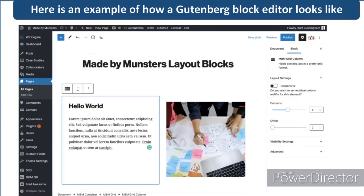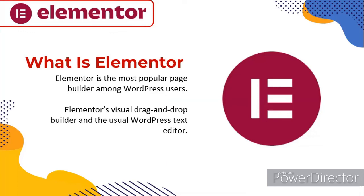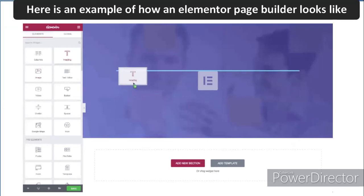Let's move on and talk about the other editor, Elementor. Elementor is the most popular page builder among WordPress users. It has an average rating of 4.7 out of 5 and over 5 million active installations. Elementor was first introduced in 2016 and took over the lead very fast. Its popularity is due to its difference from the usual WordPress text editor — Elementor is a visual drag-and-drop builder, which makes creating a website through WordPress easier and faster. Here is an example of how an Elementor page builder looks like.